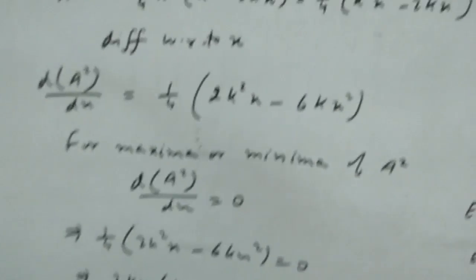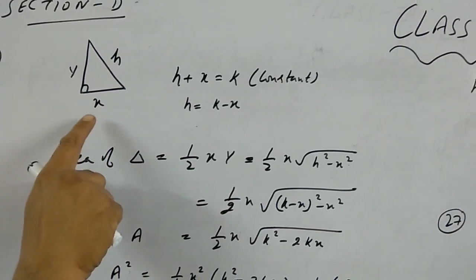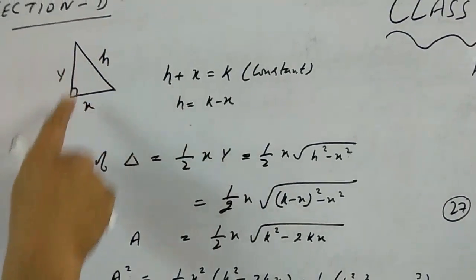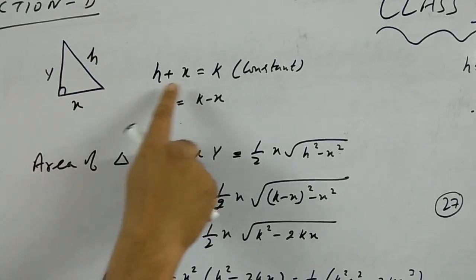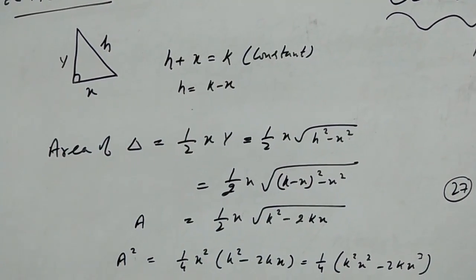Two things we need to show: the area is maximum and prove which angle is π by 3. Let's suppose this is a right angle triangle with sides x and h. The sum of h and x is k, constant given, so h is equal to k minus x, and third side suppose y.